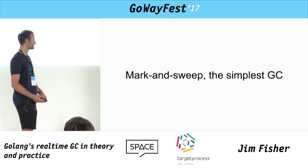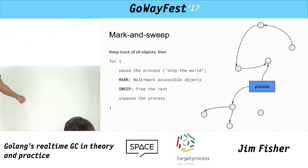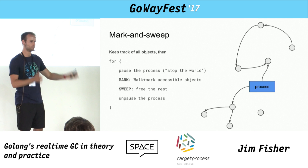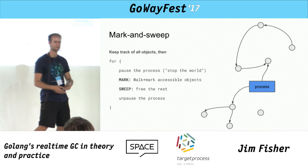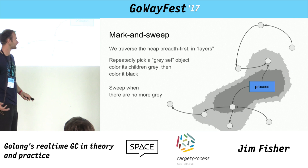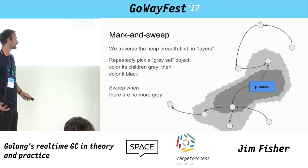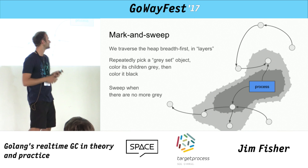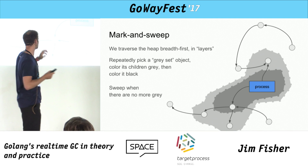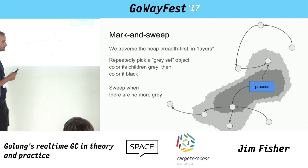How does mark and sweep work? Here's pseudo-code: we loop forever, run our program for a while, then pause it, do a mark phase, do a sweep phase, unpause our process, and carry on. The complex part is the mark phase. During the mark phase, you allocate each object to one of three sets: black, grey, and white. Each object is in one of those sets.